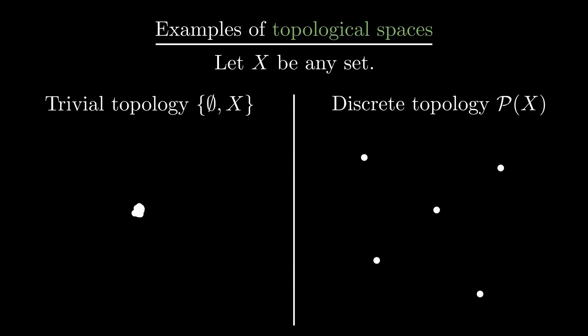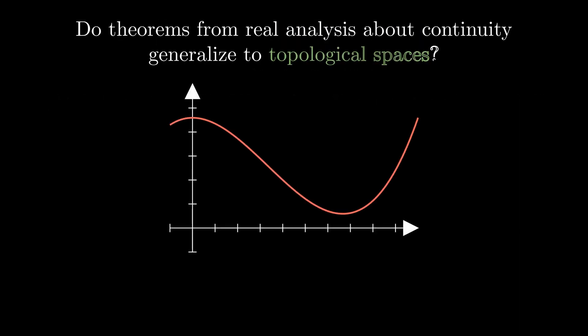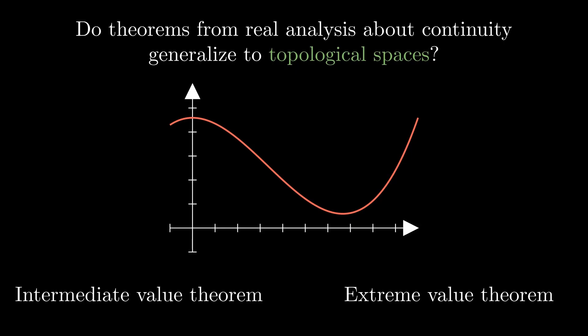Now we have a very general notion of a space on which we can define continuous maps. Do these continuous maps behave like those in real analysis?